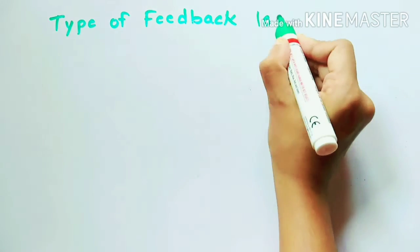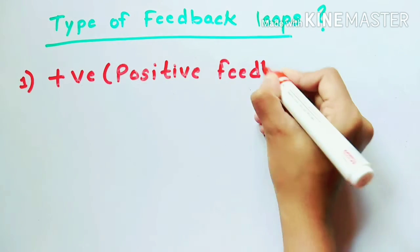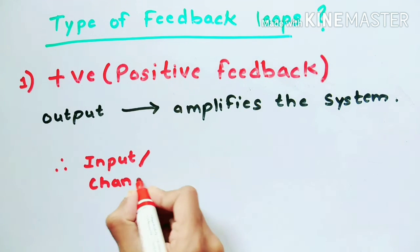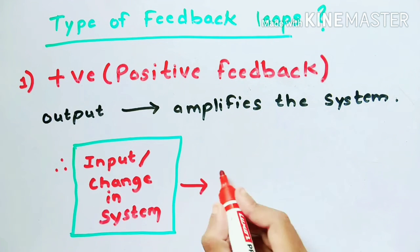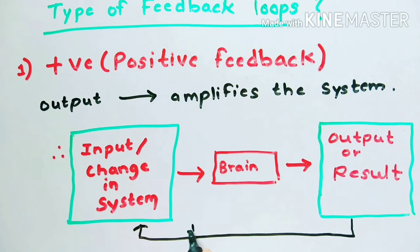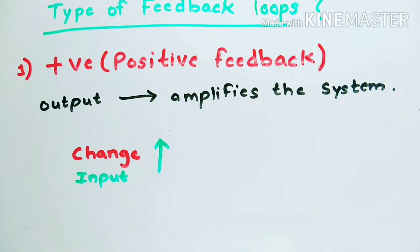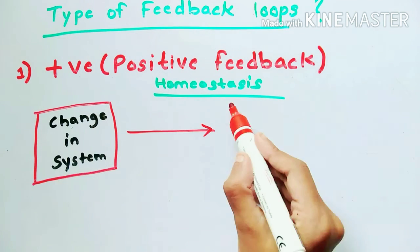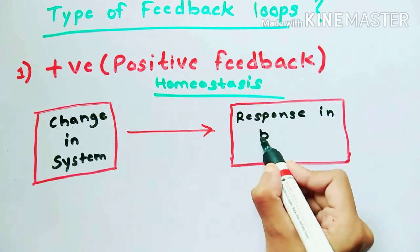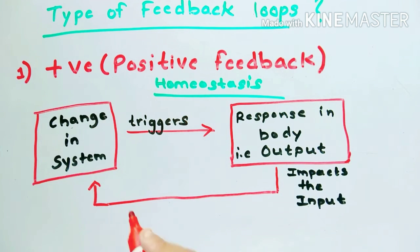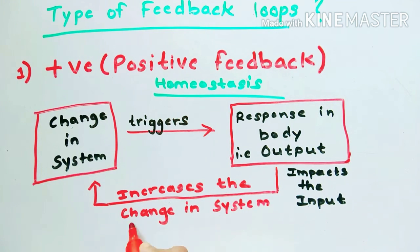The first type is the positive feedback loop. In a positive feedback loop, the output of a system amplifies the system, meaning a change in the system gives an output, and this output increases the change in the system. So the change in system — our input — produces a response, that is the output, and this output in turn will increase the change in the system, that is our input.